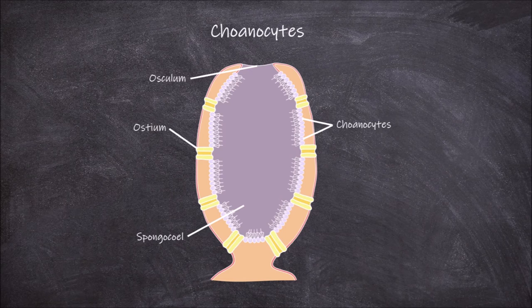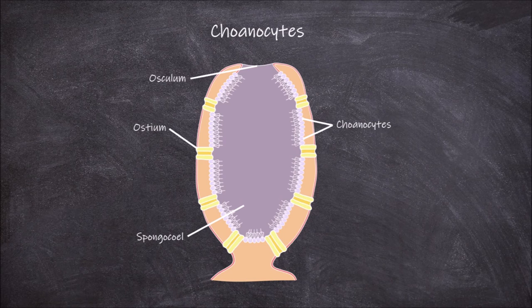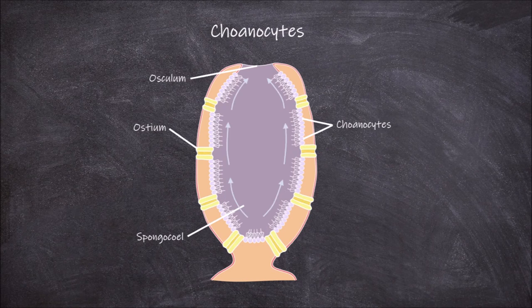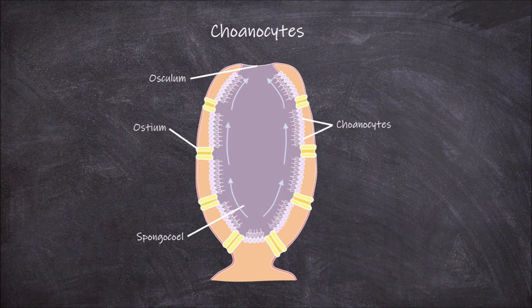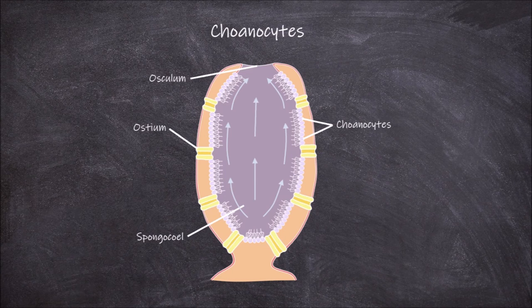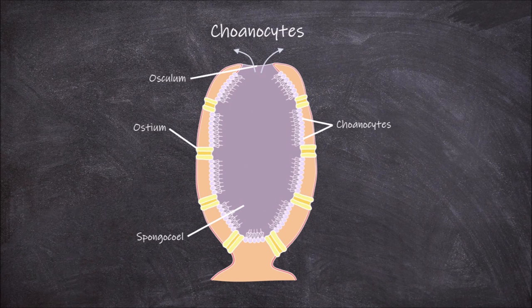The movement of the flagella of the choanocyte simultaneously causes the movement of water through the sponge. The water comes in through the ostia pores, past the choanocytes where nutrients and food can be collected, then into the spongocoel and up out of the sponge through the osculum.